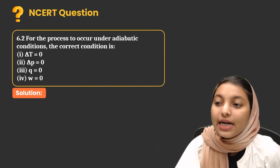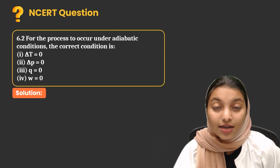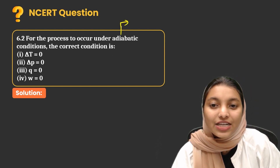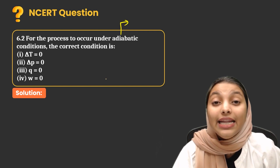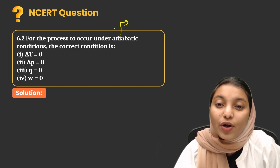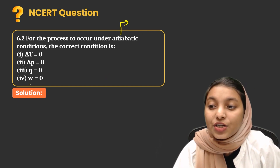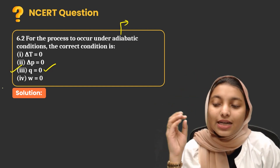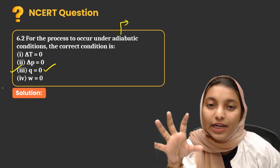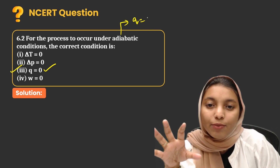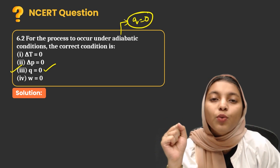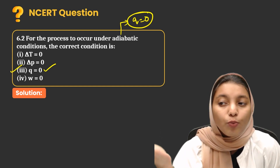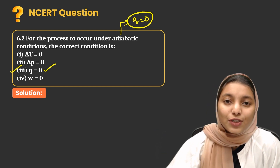For the process to occur under adiabatic conditions, we know there is no heat exchange happening. So for adiabatic conditions, Q must be 0. The third option is the correct answer for adiabatic conditions — Q is equal to 0. It was a simple question. I hope you understood the answer.